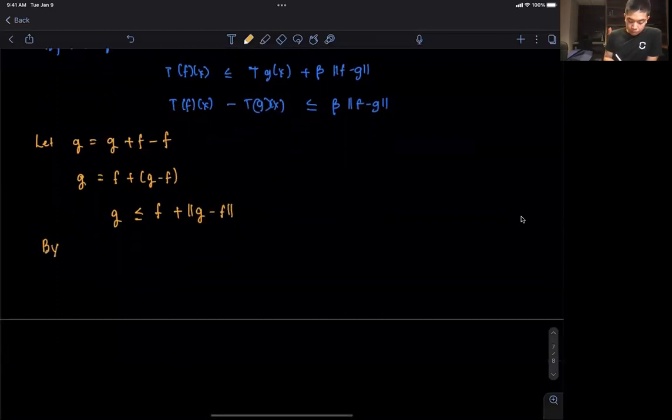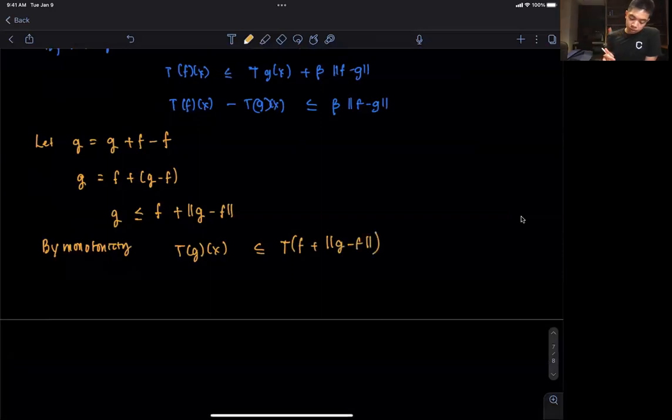And we know that by monotonicity, T(g)(x) is less than or equal to T(f)(x) plus beta times ||g - f||. That's by monotonicity.